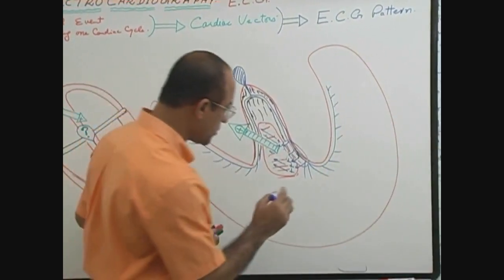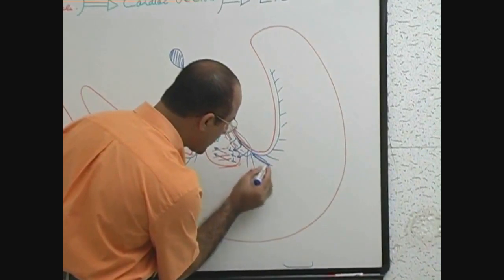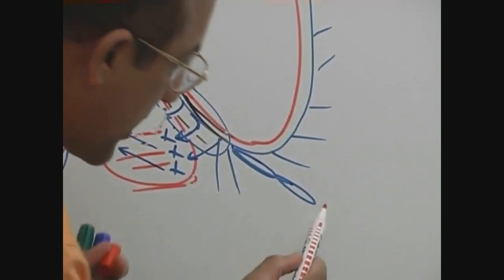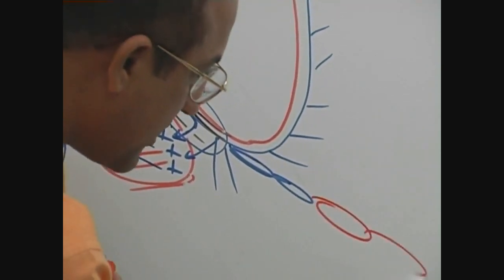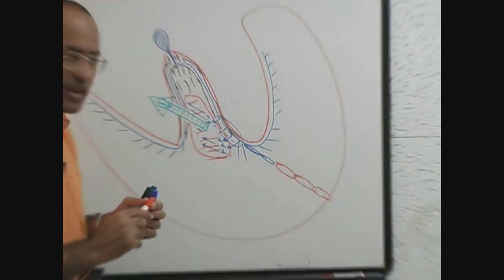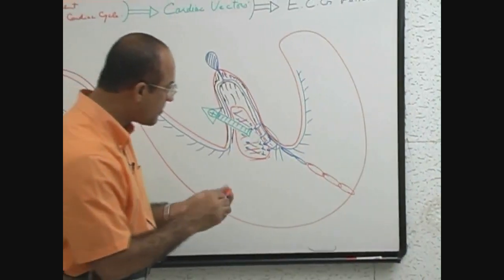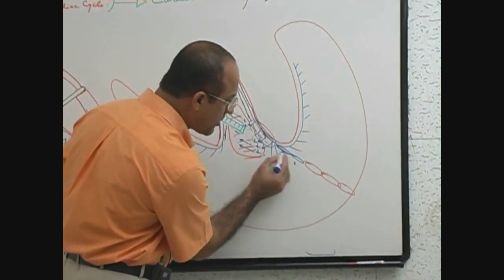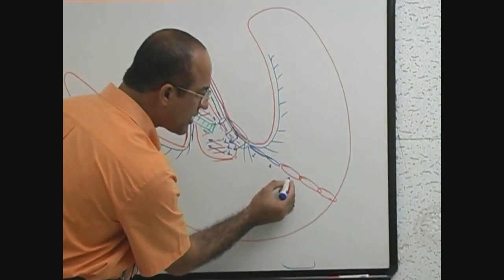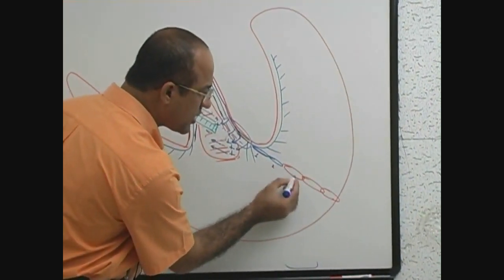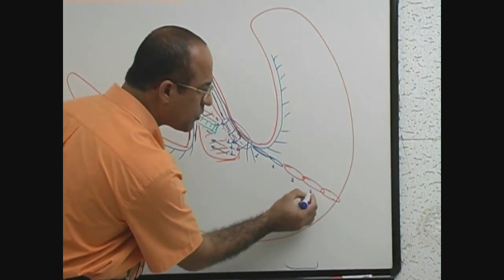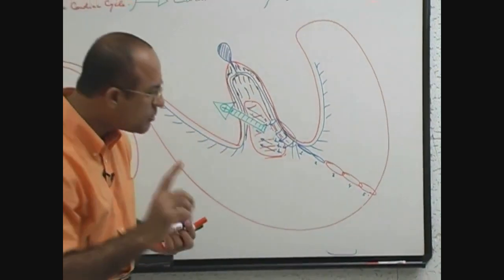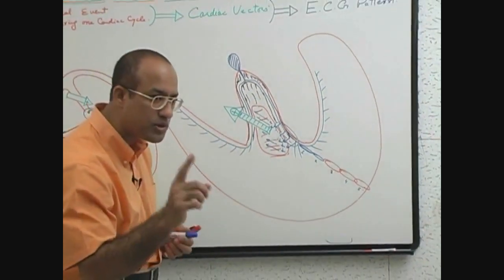These are Purkinje cells, and they are connected with myocardial cells. Naturally, the first cell will stimulate the second in a fast way, and then that will conduct through to the third, and depolarization will go to the fourth cell and fifth cell.